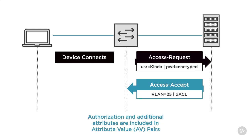Additional attributes, such as which VLAN to place a user in or any downloadable ACLs, can also be included in their own respective attribute pair — all within this one access accept message. Even if the user is authenticated but not authorized, that will be included in the access accept message. In this case, the word 'accept' is only for the authentication, not authorization; the authorization result is included within the message in the attribute value pair.